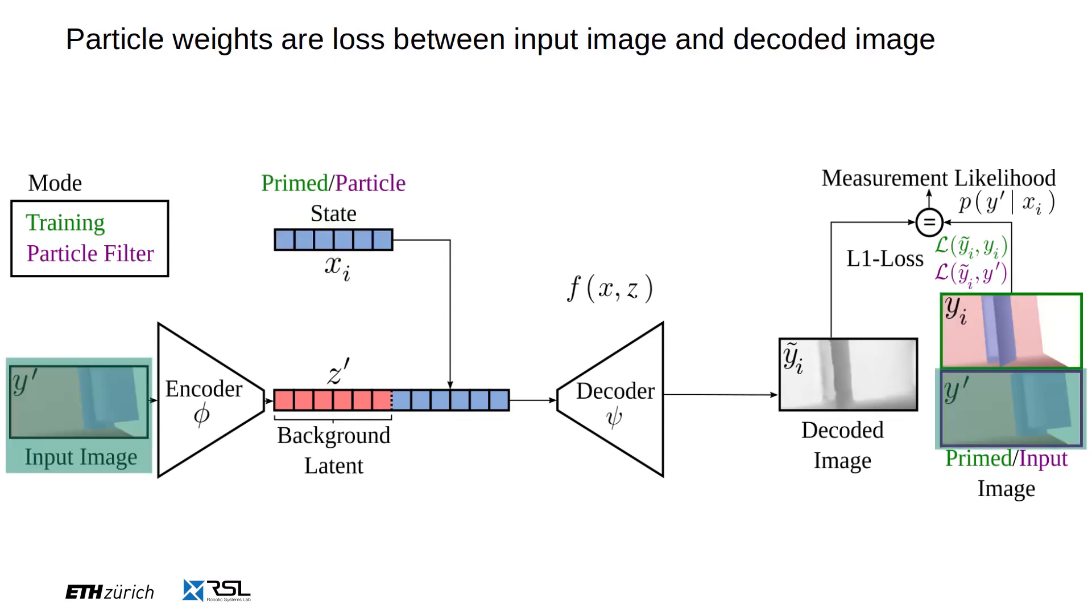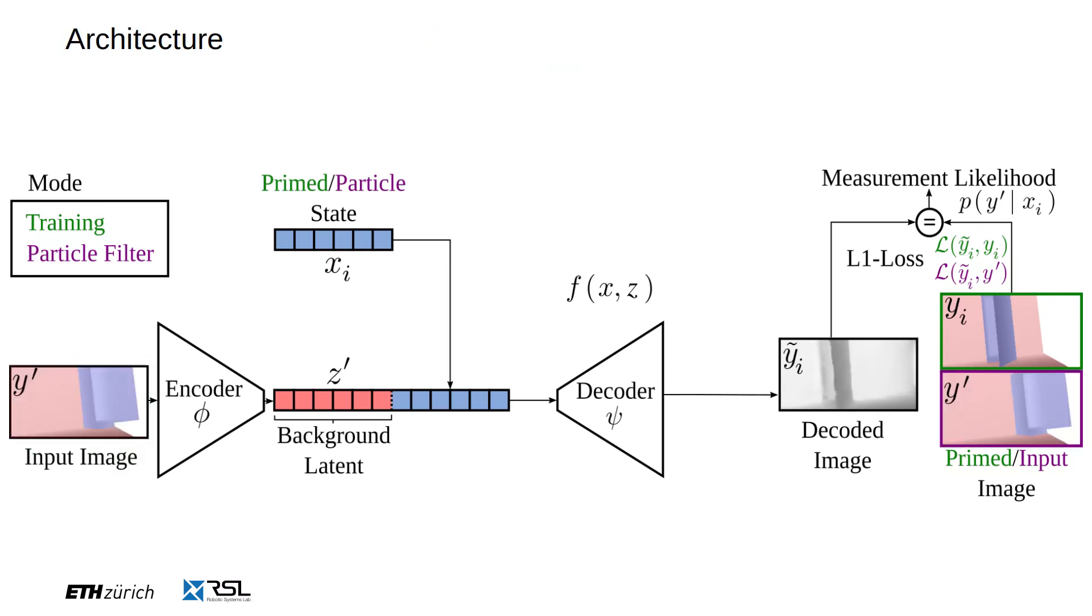When deploying as part of a particle filter, the target image is the same as the input with the network conditioned on the queried particle state. We use the loss as a likelihood measure between the particle states and the true ground truth state. Those likelihoods are used in the measurement update for the Bayes filter.